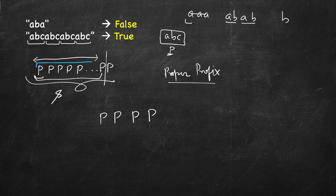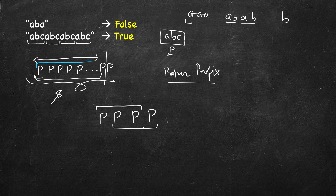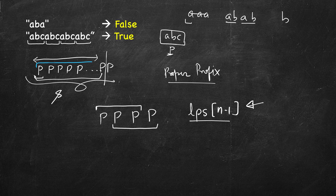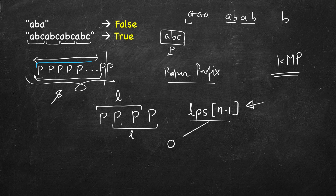We cannot include the last character. If we don't include it, we are removing something from the last p, so that cannot match. If we have a form like p p p p, ignoring the last p, the remaining prefix is the same as the corresponding suffix. This will be the longest prefix-suffix (LPS) of index n minus one, the last character. If LPS is zero, there is no prefix matching the suffix, so the string cannot be of the repeated pattern form.